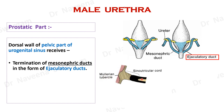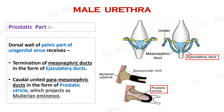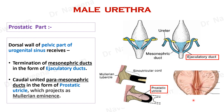As most of the paramesonephric ducts degenerate in males, only the caudal part remains as prostatic utricle, which opens into the sinus through mullerian tubercle. This remains as a midline mucosal elevation in the dorsal wall of prostatic urethra known as colliculus seminalis. It receives the openings of prostatic utricle above and ejaculatory ducts below.